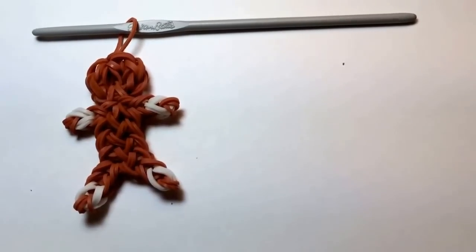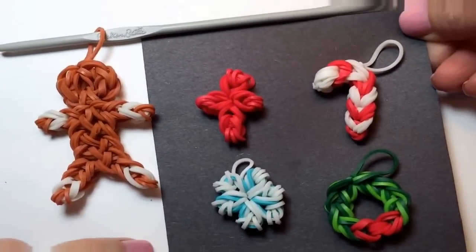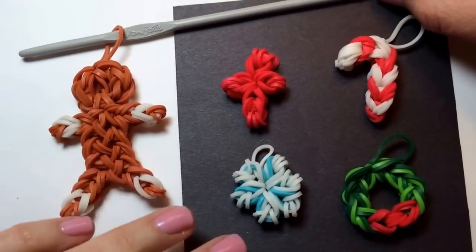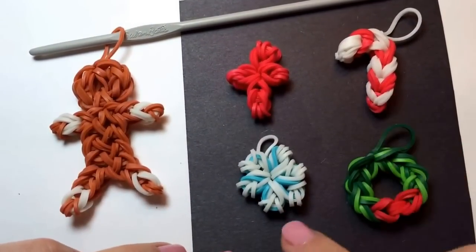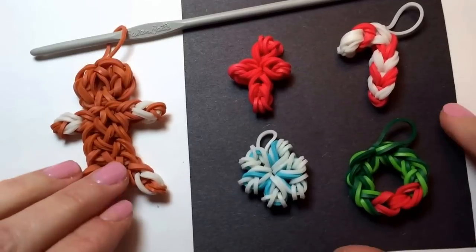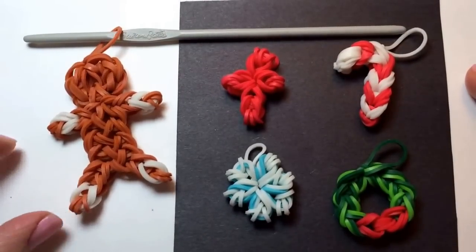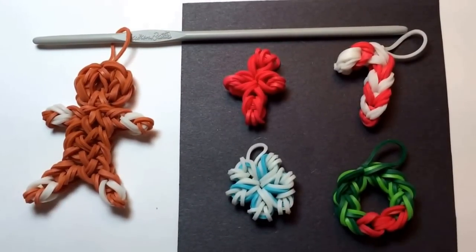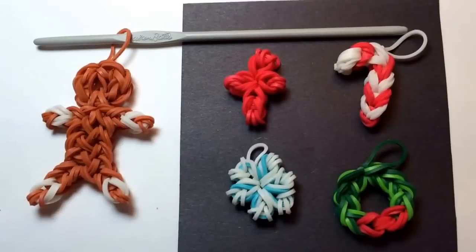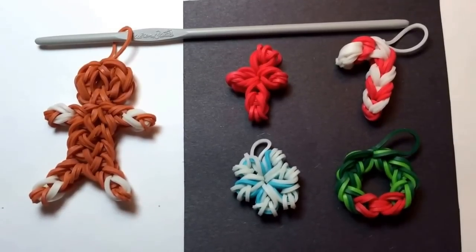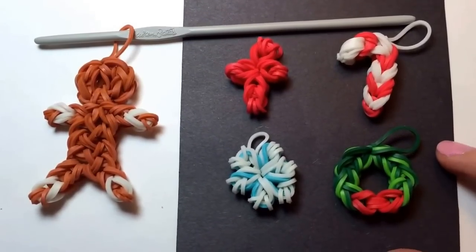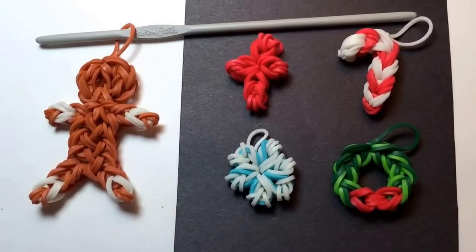I'd suggest you also consider looking at the videos I've made for how to make the mini cross, the candy cane, the snowflake, and the wreath all using just a crochet hook. And if you do have a rainbow loom, I have about 30 videos on how to make charms and bracelets on the rainbow loom. So consider clicking the gingerbread man to subscribe to find out when I post additional videos. Or click here for a link to my other videos if you want to watch more right away.